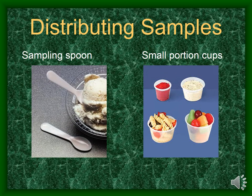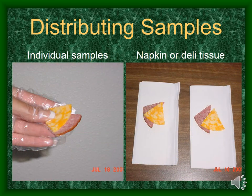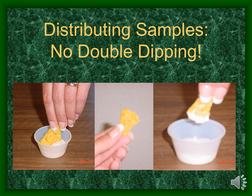The next food preparation process involves distributing samples to the public. It is important to distribute samples in such a way that they are not contaminated by the consumers or by the persons dispensing the sample. You can use things like sampling spoons, small portion cups, or toothpicks stuck into the food. Do not put toothpicks in a pile where people can touch all of the toothpicks that others will use. You can also hand the customer an individual sample or put individual samples on a napkin or piece of deli tissue. Make sure that if you are sampling things such as dip, your customers are not double dipping.